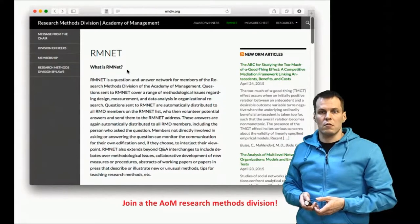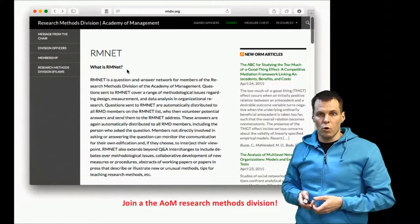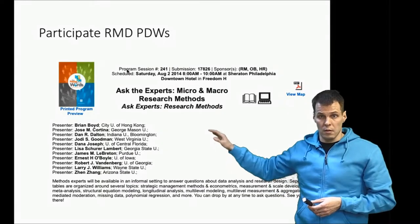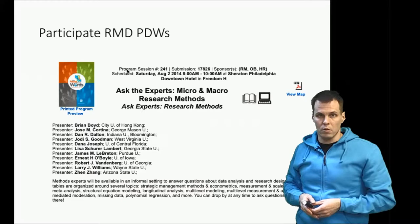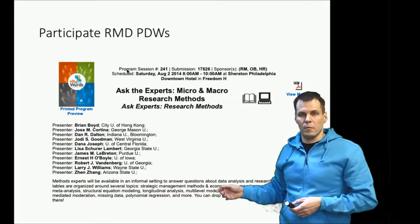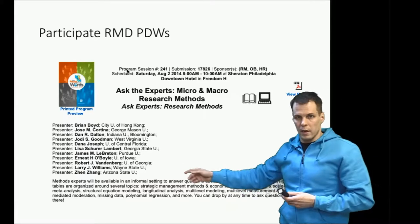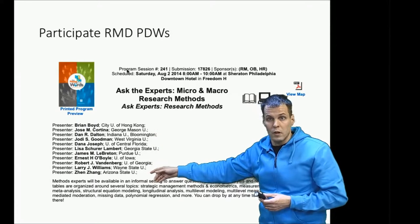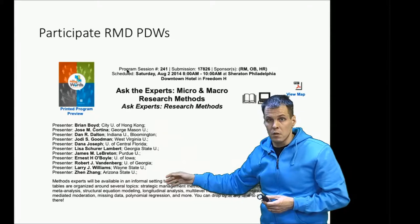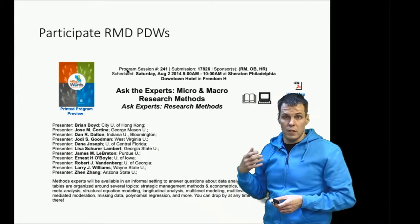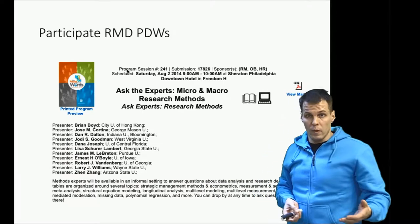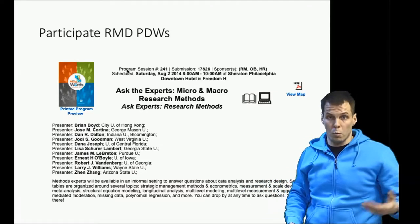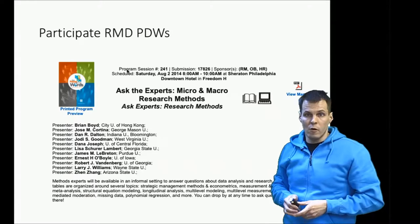The Academy of Management Research Methods division also organizes pre-conference workshops or professional development workshops. For example, there are sessions where you can meet people who know a lot about methods. If you like a paper by Aguinis and Vandenberg, you can go and see Bob Vandenberg and ask questions from him. There are open settings where experts in methods come and you can talk to them, even bring your paper or a regression table and get one-on-one feedback.